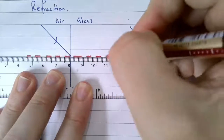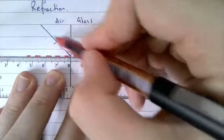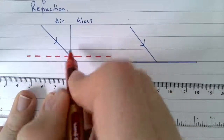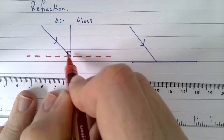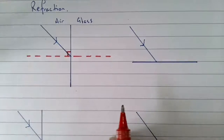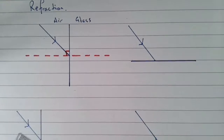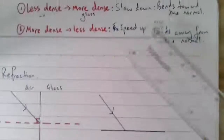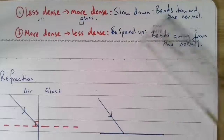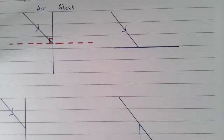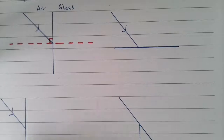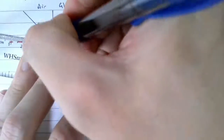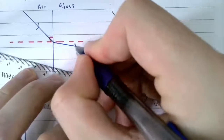Ignore your ray of light when drawing the normal, because it's easy to get confused and think the normal is related to the ray. Just look at where the light touches the boundary and make sure the normal is perpendicular to the surface. Now we know the light slows down and bends towards the normal, so it refracts like this.